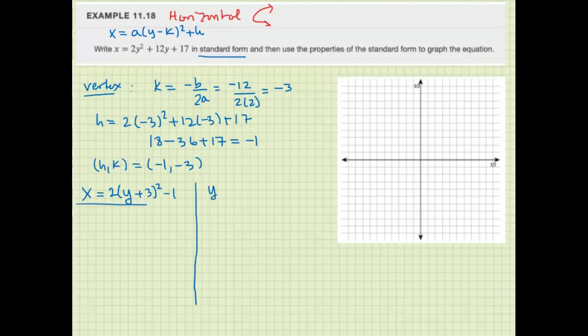Now y value column here. To the vertex, we have negative 1, negative 3. Pick y value. So pick a couple of bigger ones and a couple of smaller ones.